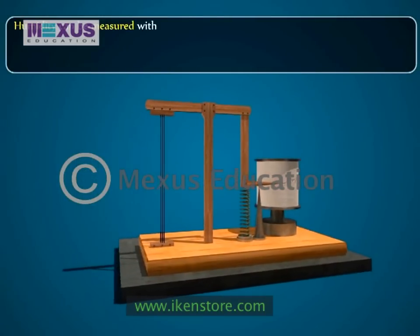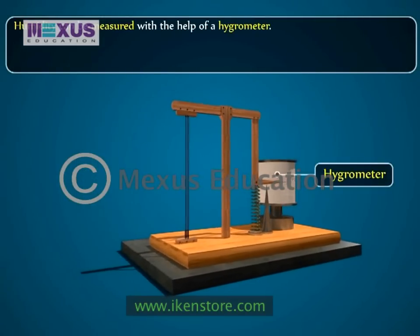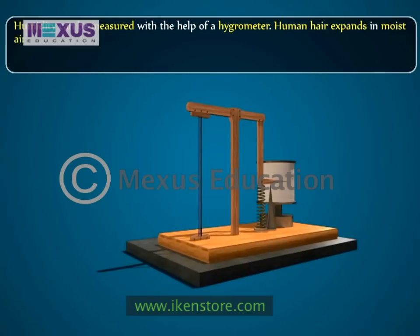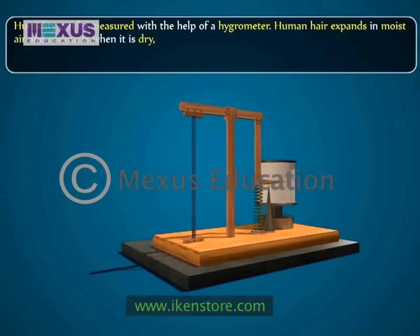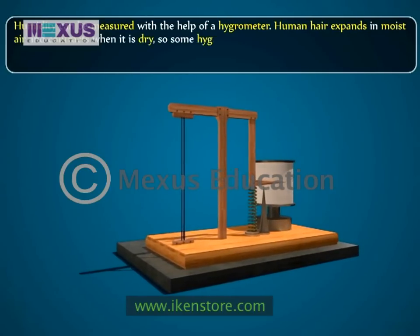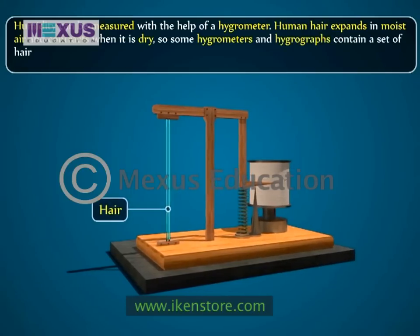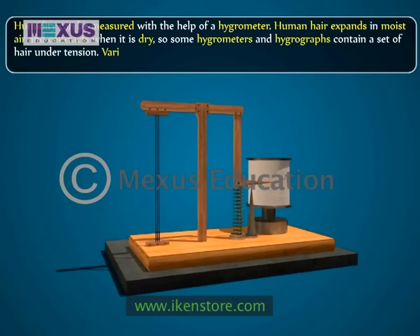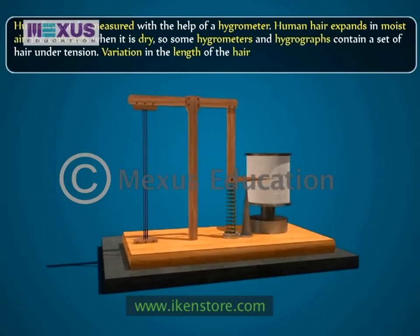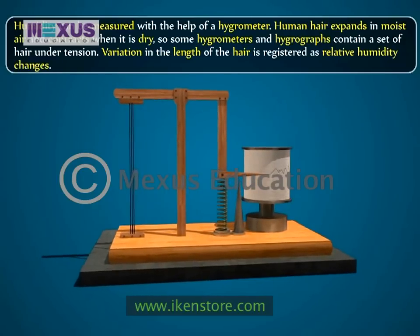Humidity can be measured with the help of a hygrometer. Human hair expands in moist air and contracts when it is dry. So, some hygrometers and hygrographs contain a set of hair under tension. Variation in the length of the hair is registered as relative humidity changes.